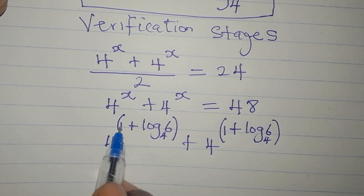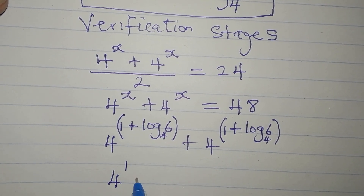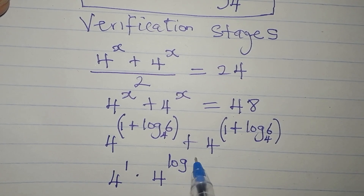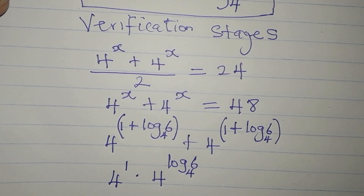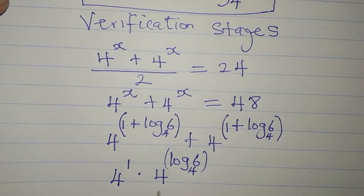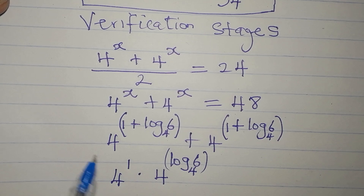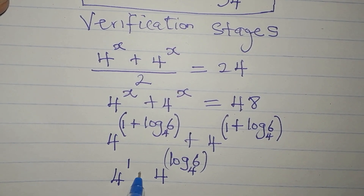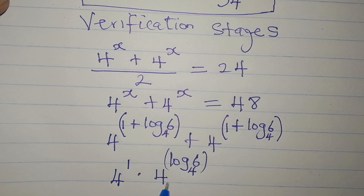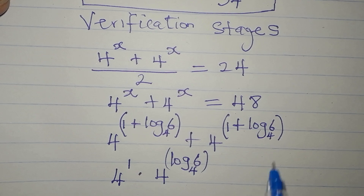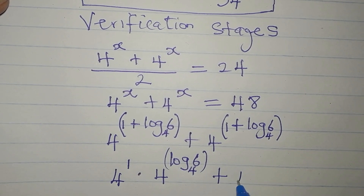Going ahead, we have 4 to the power of 1 multiplying 4 to the power of log 6 to base 4. Using the law of indices — when multiplying the same base you add the powers — adding these powers gives back the original exponent. So we have the same expression for both terms: 4 to the power of 1 multiplied by 4 to the power of log 6 to the base of 4.